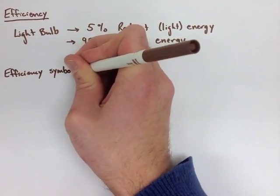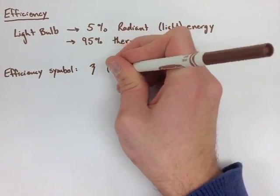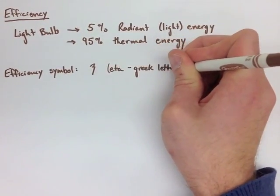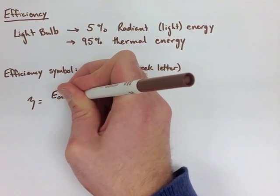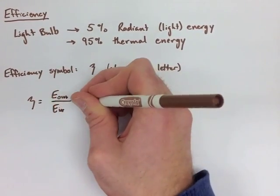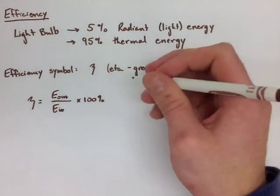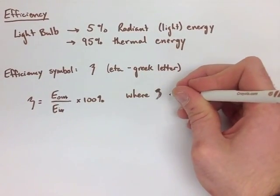The symbol for efficiency is the Greek letter eta, just like when we're using theta or something like that for a different symbol. Efficiency is equal to the energy out divided by the energy in times 100%.